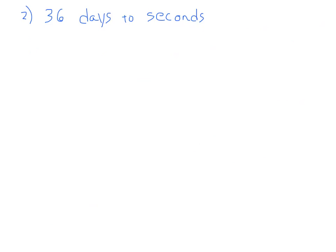Let's look at the next example: 36 days to seconds. First step, make your roadmap. You recognize this is a unit conversion because you have one unit and it's asking for a different unit. We're starting with days and we're going to seconds.